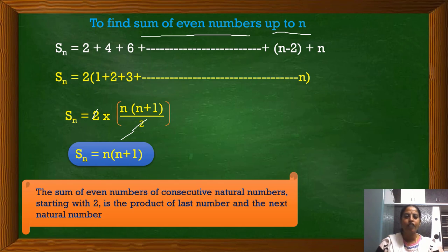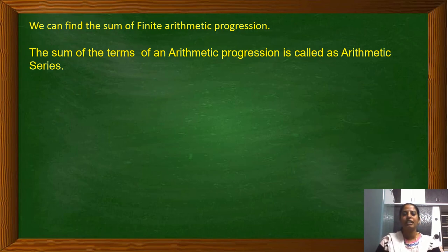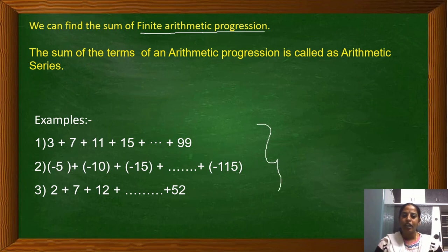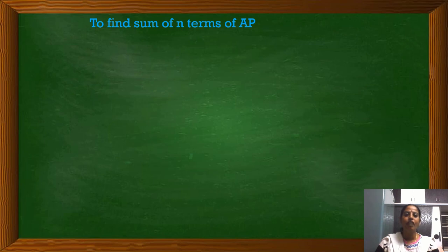The sum of even consecutive natural numbers starting with 2 is the product of the last number and the next natural number. We know the set of natural numbers is in arithmetic progression. We can find the sum of a finite arithmetic progression. The sum of the terms of an arithmetic progression is called an arithmetic series. Examples such as 1+2+3+...+n and 2+4+6+...+n are arithmetic series. Also, 3+7+11+15+...+99 is a finite arithmetic series. We can only find the sum of finite arithmetic progressions.